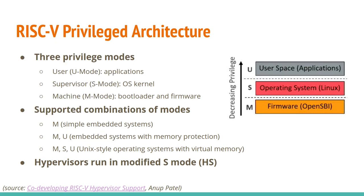The RISC-V privilege architecture has three different modes. Machine mode or M mode is the bare metal level where you'd have the bootloader or firmware. Supervisor mode or S mode is where the OS kernel like Linux would run. User mode or U mode is where applications run. M alone would be a simple bare metal embedded system. M and U would be an embedded system with memory protection probably running an RTOS. M, S, and U together give us a Unix-style operating system with virtual memory. There's also a hypervisor extension in draft that would give a modified S mode called HS.